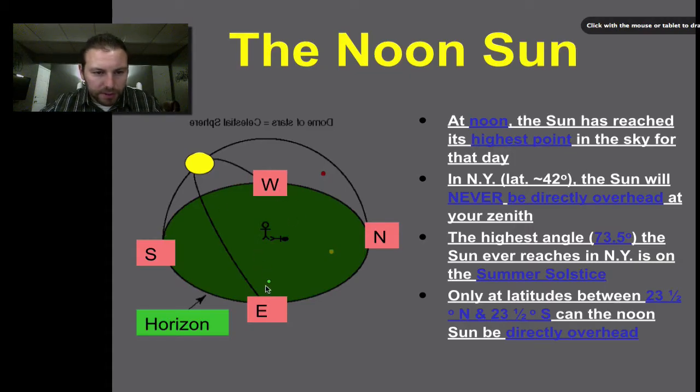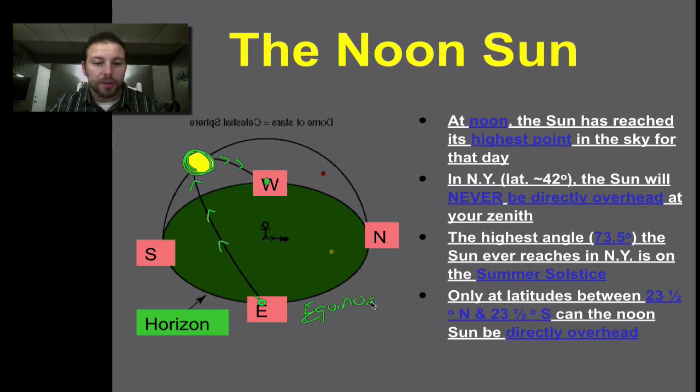Notice that in this diagram the sun is going to rise in the east, throw some arrows on there, it gets to noon where it's at its highest point, and then it's going to set towards the west. Because it's rising and setting directly in the east and west, this is going to be one of the equinoxes. The noon sun is when the sun has reached its highest point in the sky for that day.